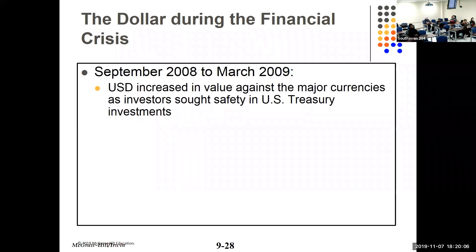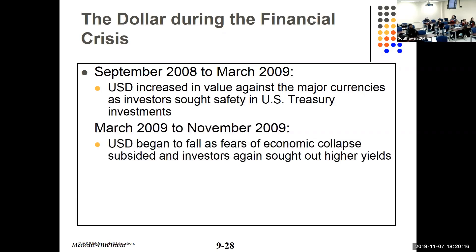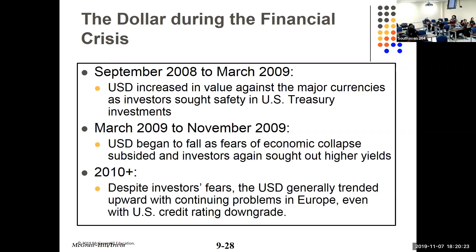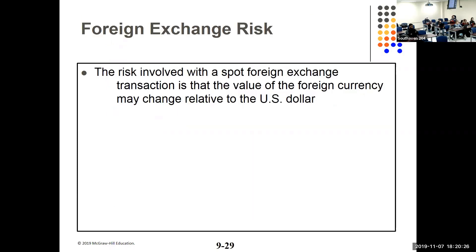During the financial crisis, the US dollar increased against major currencies as investors sought safety in US Treasuries — it's a safe harbor. After our financial crisis, the dollar began to fall.